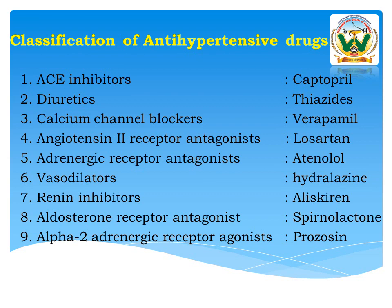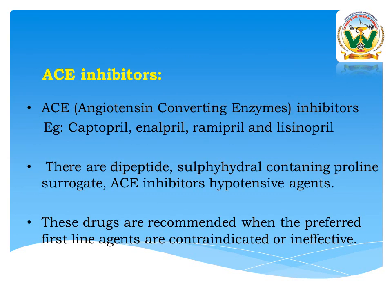Among these classifications, I will explain about one of them: ACE inhibitors. Examples of ACE inhibitors include Captopril, Enalapril, Ramipril, Lisinopril — these are lipeptides — and Sulfapril, which contains a proline surrogate. ACE inhibitors are hypotensive agents. These are recommended when the preferred first-line agents are contraindicated or ineffective.